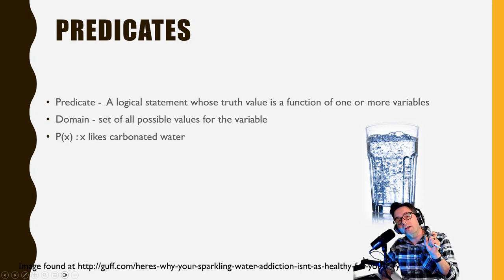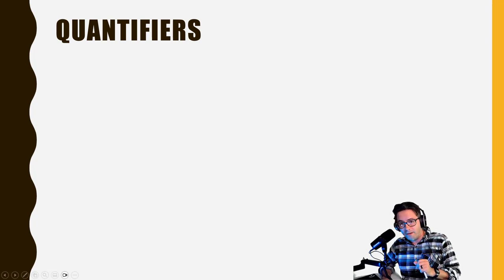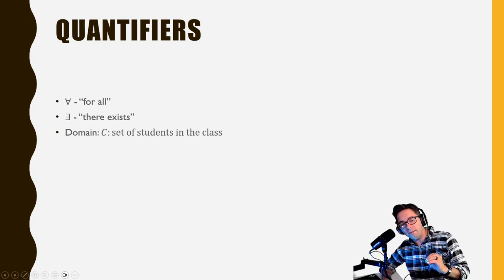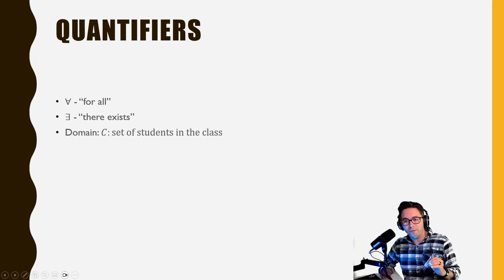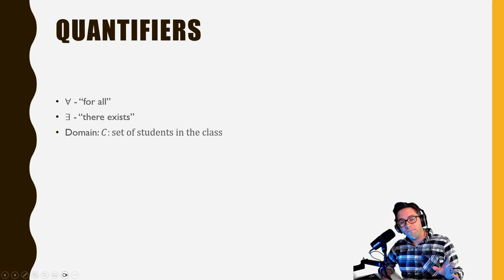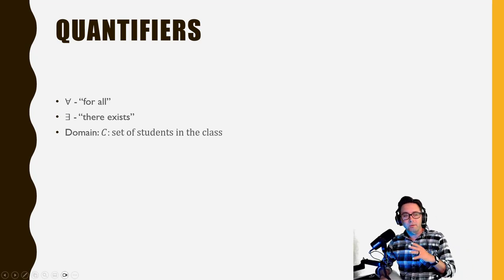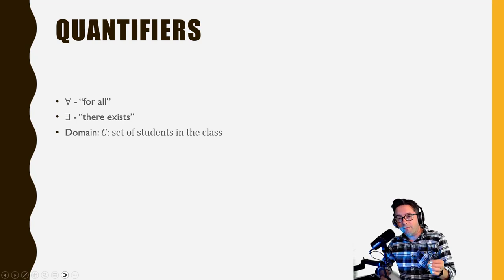Tied to predicates are quantifiers. We have two: the upside-down A, which means 'for all' — that's the universal quantifier — and the backwards E, which means 'there exists' — that's the existential quantifier. Let's say C is the set of students in the classroom. We haven't talked about set theory yet but we will. For now, focus on the quantifiers and the predicates rather than the set notation.